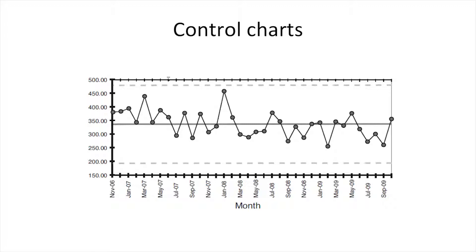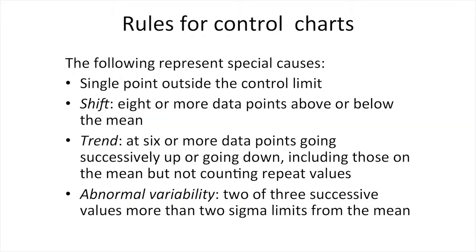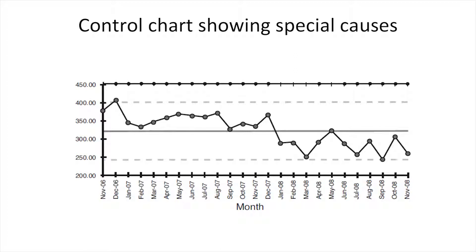Standard deviations are used in specific charts of normally distributed variables, such as physiological measures including glucose or cholesterol. Means and control limits should be calculated according to the population sample size and type of data, usually using computer software. Rules for control charts include: a single point outside the control limit; a shift where eight or more data points are above or below the mean; trends where six or more data points go successively up or down; and abnormal variability where two or three successive values are more than two sigma limits from the mean. In the example control chart for hypnotic prescribing, the second dot falls above the upper control limit, and a shift of eight dots below the mean is present from January 2008.